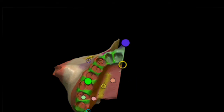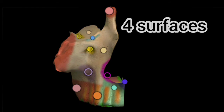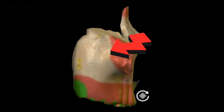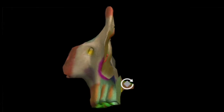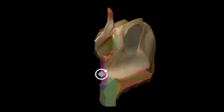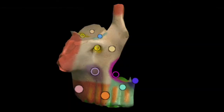Now talking about the surfaces of the maxilla, we have four surfaces: the anterior surface, the posterior surface, the orbital surface, and the nasal surface. Both halves of the maxilla have similar structures, similar bony prominences, and similar bony markings on both sides, forming a single unit. Let's study each surface in detail, beginning with the anterior surface.